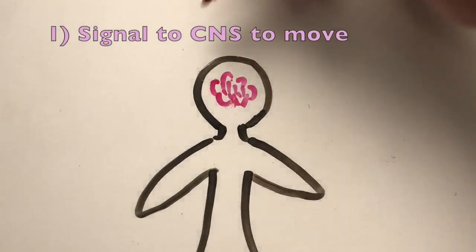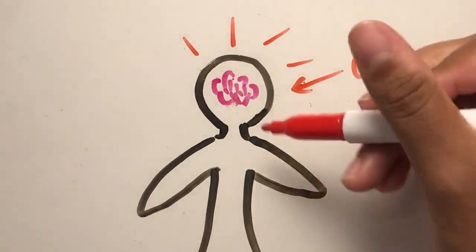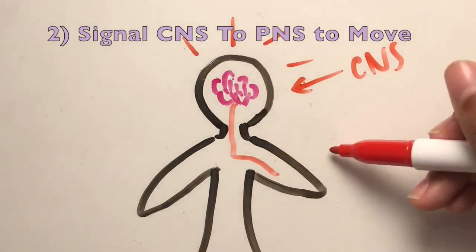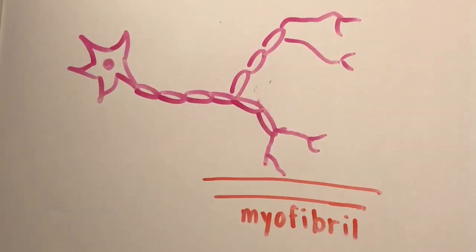First thing we need to know is that our skeletal muscles move involuntarily. For this reason, our central nervous system needs to send a signal to the peripheral nervous system in order for this whole process to begin.